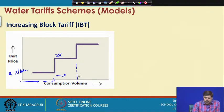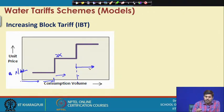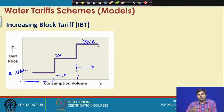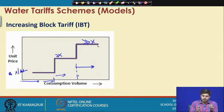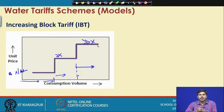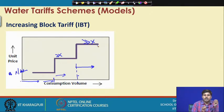If consumption increases further beyond the next slab, the customer is charged even higher — possibly many folds higher than X — and this could be prolonged till the last slab. Generally, 3 or 4 slab systems are used, and pricing is done based on the level of consumption.